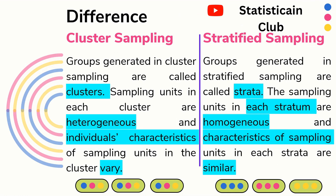First difference: groups generated in cluster sampling are called clusters. Sampling units in each cluster are heterogeneous and individual characteristics vary. As you can see from the figure, suppose this is the first cluster, this is the second cluster, and this is the third cluster. The sampling units in each cluster are heterogeneous — the first ball is blue, the second is pink, and then yellow — so their characteristics vary within the cluster.